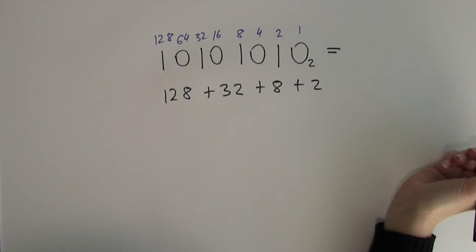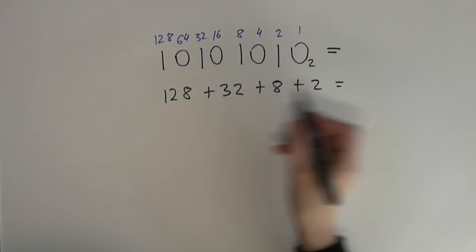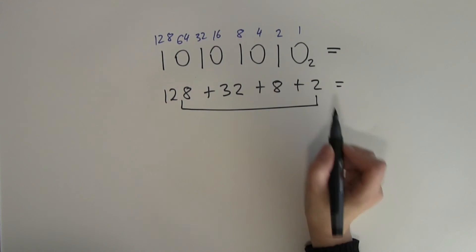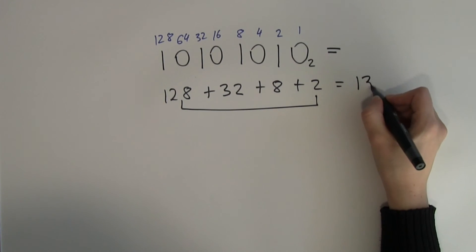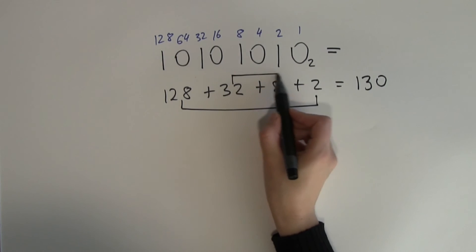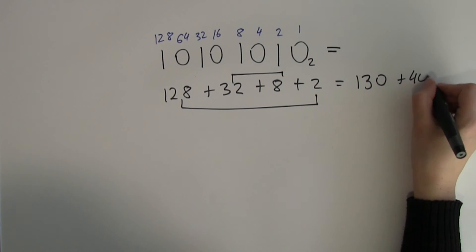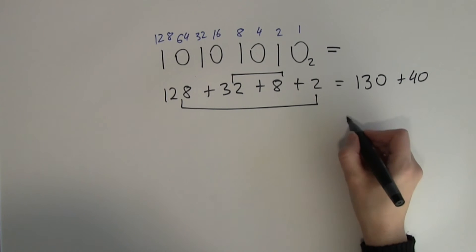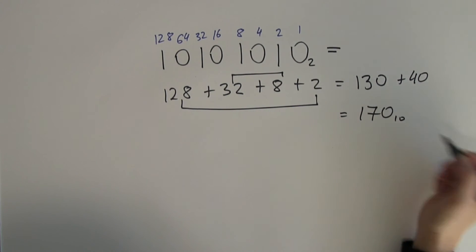I can pick and choose which numbers to add together. Adding 128 and 2 gives a nice easy number: 130. And 32 plus 8 gives 40. So 130 plus 40 means this number is 170 in decimal.